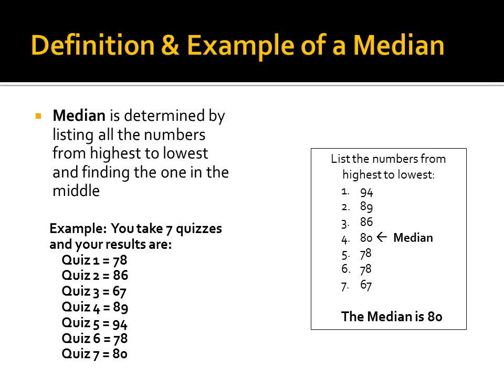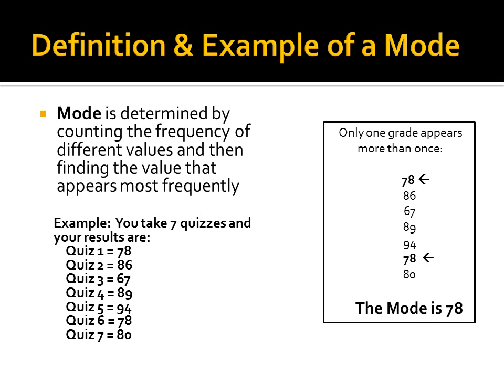The median, using the same set of quizzes: list the numbers from highest to lowest, and the one in the middle is the median — which here is 80. Finally, the mode: count the frequency of the different values. There is one grade that appears more than once, which is 78, so the mode is 78. So our mean is 82, our median is 80, and our mode is 78. As you can see, these three numbers are not the same, so depending on how a statistic is reporting the average, you have to identify whether it is a mean, median, or mode.